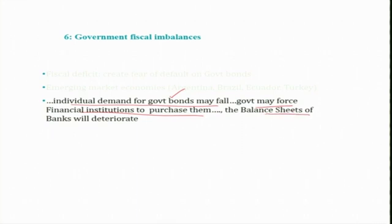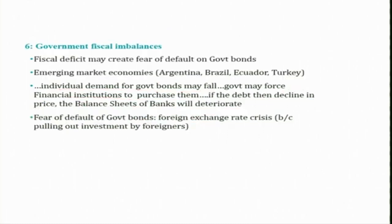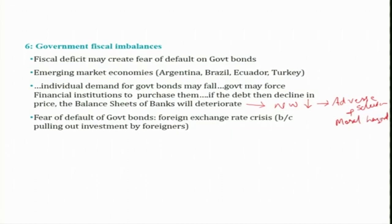As a result, the balance sheets of banks will start deteriorating. Recall what we studied in the previous session: when the balance sheets of banks deteriorate, the banks' net worth will be declining, and this will lead to the problem of adverse selection and moral hazard. That is one issue. Second, if there is a fear of default on government bonds, foreign investors who normally invest in government bonds of other countries — suppose India's fiscal deficit keeps increasing — then those who have invested in India's government bonds will pull back their money.